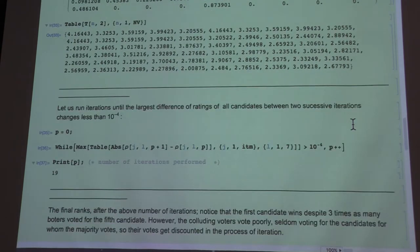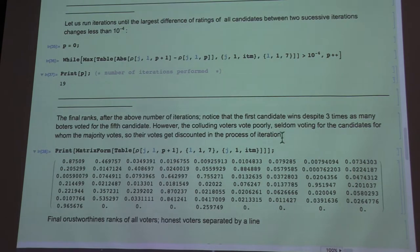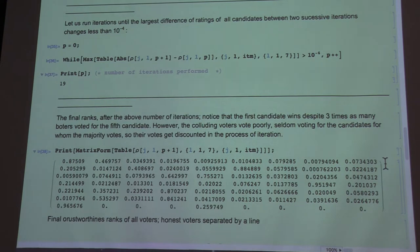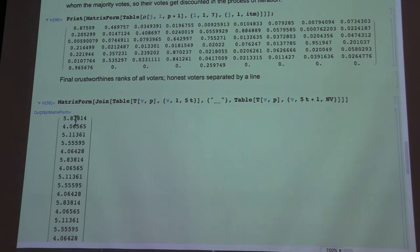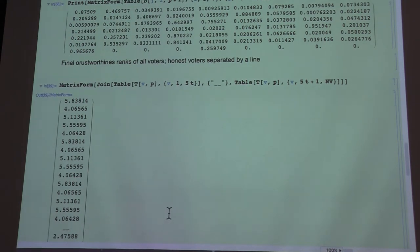And lo and behold, this is the trustworthiness table now. You see, honest voters have 5.8, 5, or 4, and the polluting voters have much smaller ranks.